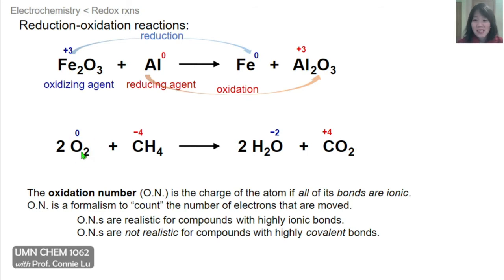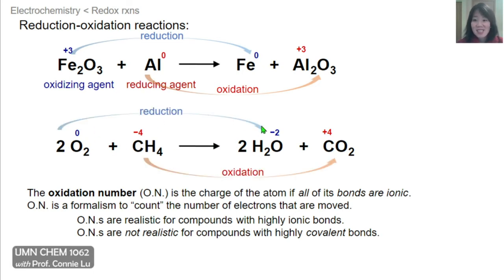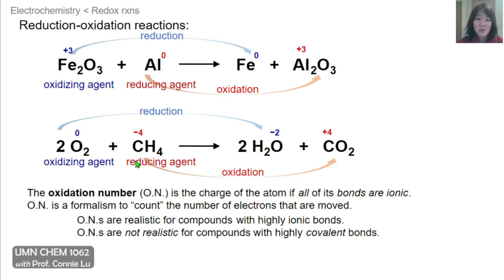In the combustion of methane, oxygen and methane form water and carbon dioxide, and the bonds are very covalent. We use oxidation numbers simply as a way of keeping count of electrons. In O₂, the oxidation number of O is zero; in water it changes to −2. Carbon in methane is formally −4, but carbon in CO₂ is formally +4. This tells us oxygen undergoes reduction to form water, whereas methane undergoes oxidation to form CO₂. So O₂ is the oxidizing agent and methane is the reducing agent.